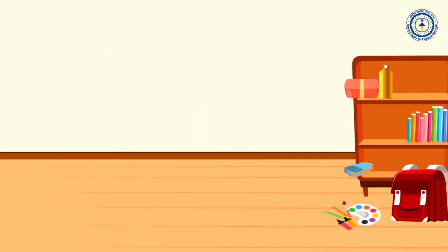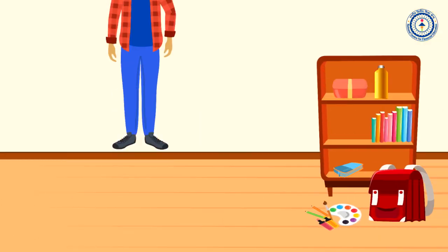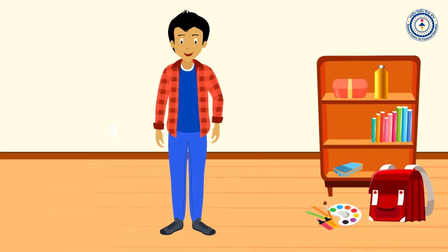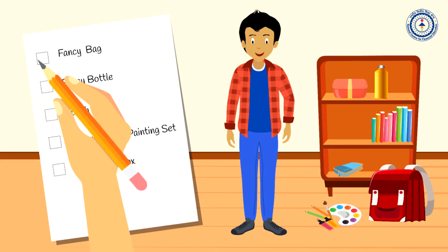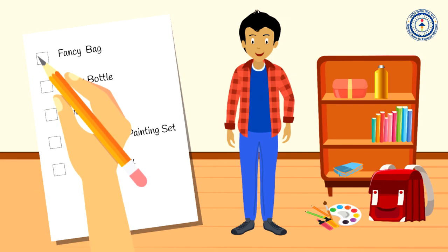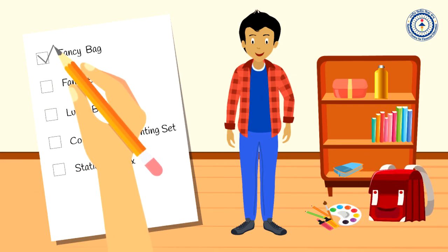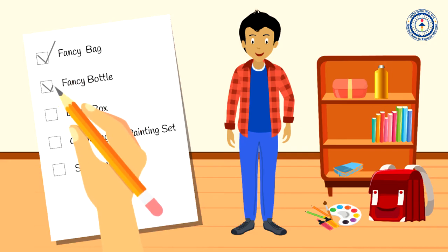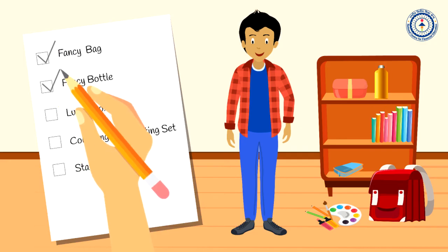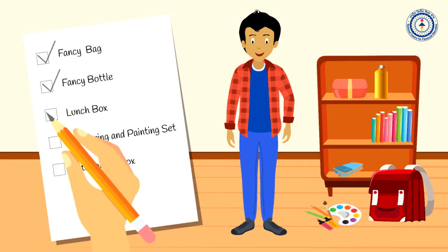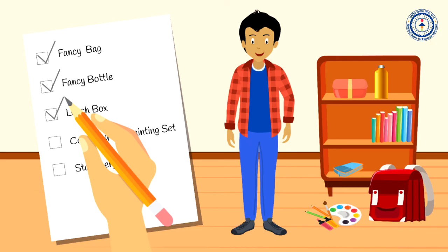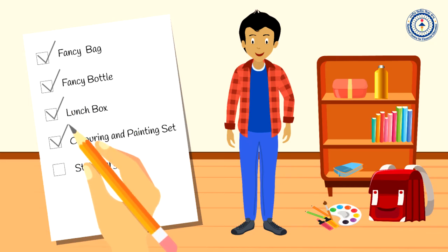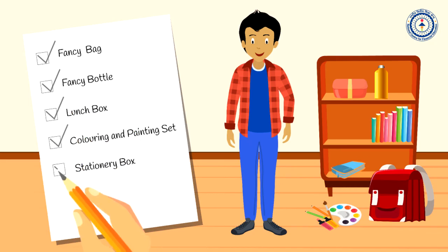Let's help Praveen list down the things he already has: a fancy bag, fancy bottle, lunch box, colouring and painting set, and a stationery box.